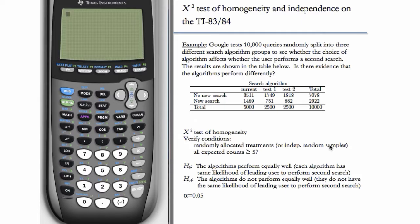However, the calculator instructions for the two are identical. For both chi-squared tests, we need all expected counts at least five. So we'll have to wait until we compute those expected counts in order to verify this condition.